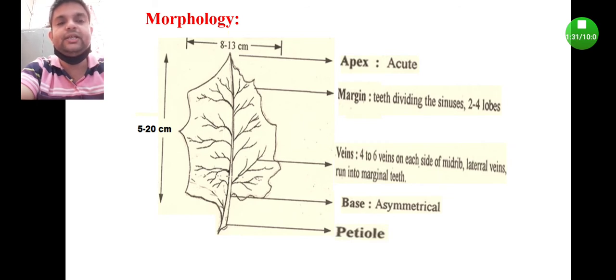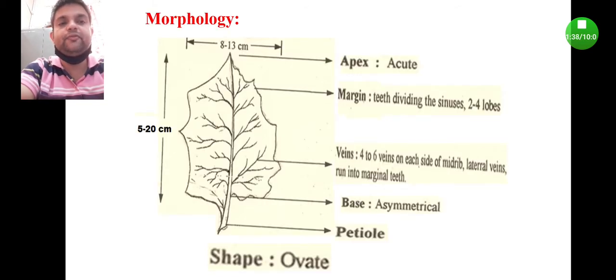Then this one is known as the petiole. The shape is known as ovate shape. So these are certain morphological characters of datura leaf.